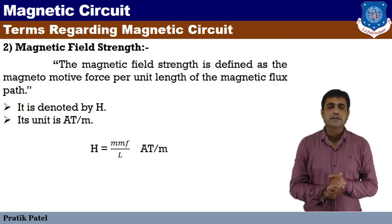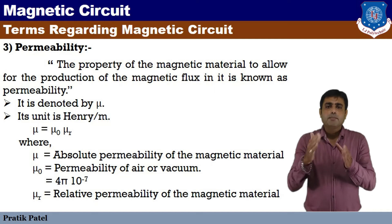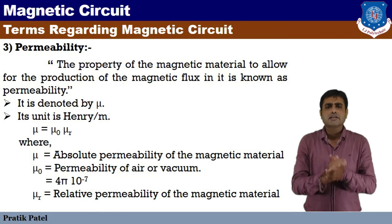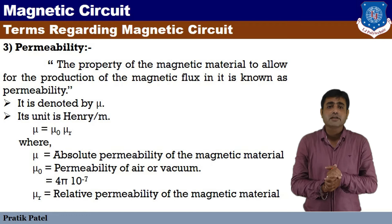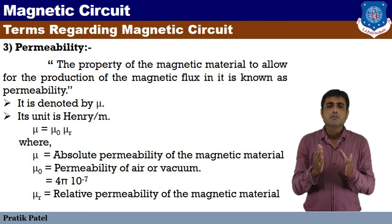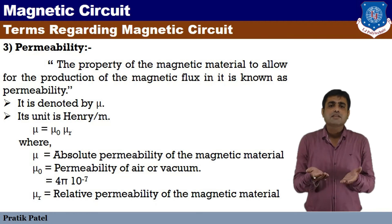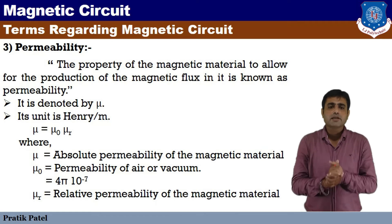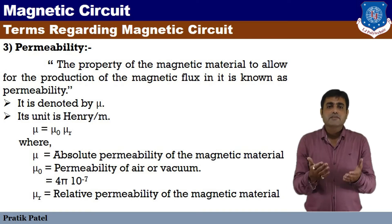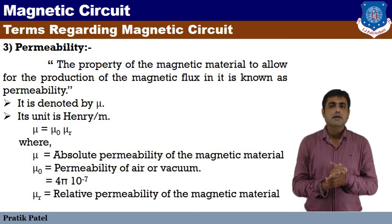The next term is permeability. Permeability means the ability of a material to permit or allow the production of magnetic flux in it. Every material has some capacity to allow magnetic flux. The property of a material to allow the production of magnetic flux in it is known as permeability. It is denoted by mu.